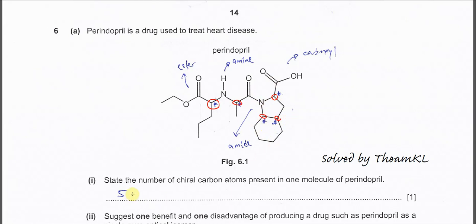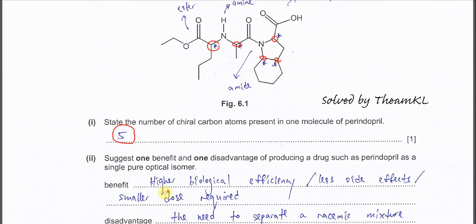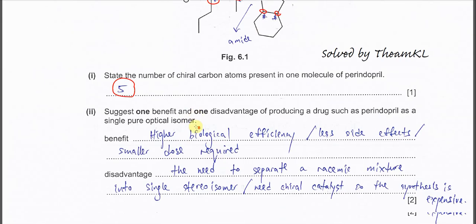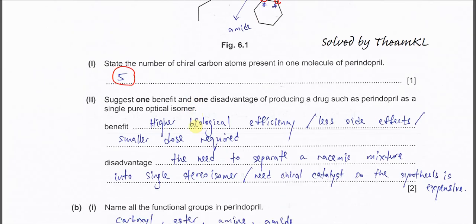So therefore the answer is 5. Part 2: suggest one benefit and one disadvantage of producing a drug such as Perindopril as a single pure optical isomer.